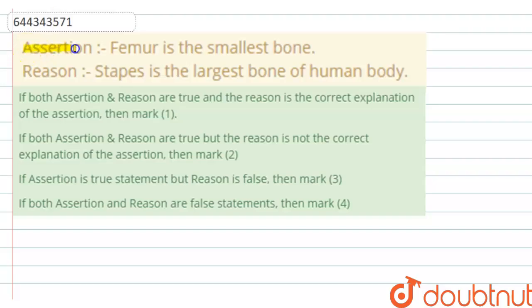The question says that assertion: femur is the smallest bone. Reason: stapes is the largest bone of human body. Options are: if both assertion and reason are true and reason is the correct explanation of the assertion, then mark one.